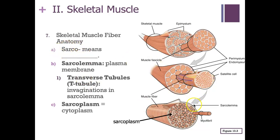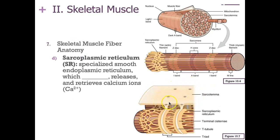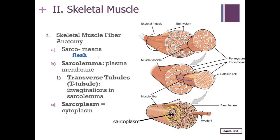The prefix 'sarco' means muscle. The sarcolemma refers to the plasma membrane of the muscle cell. T-tubules are invaginations of the sarcolemma that travel across the myofibril. The fluid found between the myofibrils — along with mitochondria — is called the sarcoplasm, similar to cytoplasm in other cells. It is the fluid that suspends the organelles within the muscle cell.